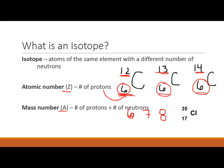Let's look at this isotope of chlorine. How many protons does it have? 17, because its atomic number is 17, written in the bottom left-hand corner. How many neutrons? The mass number is 35, which is protons plus neutrons. So 35 minus 17 protons means the remaining 18 must be the number of neutrons.